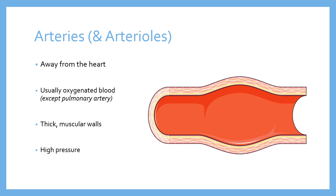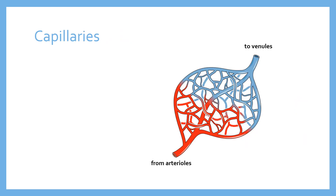The arteries bring blood to either the lungs or the muscles and other organs. When blood arrives at the lungs or muscles, it arrives from arterioles — those small arteries that have split and branched until they've arrived at the organ where oxygen is either being dropped off (in muscles) or picked up (in the lungs).